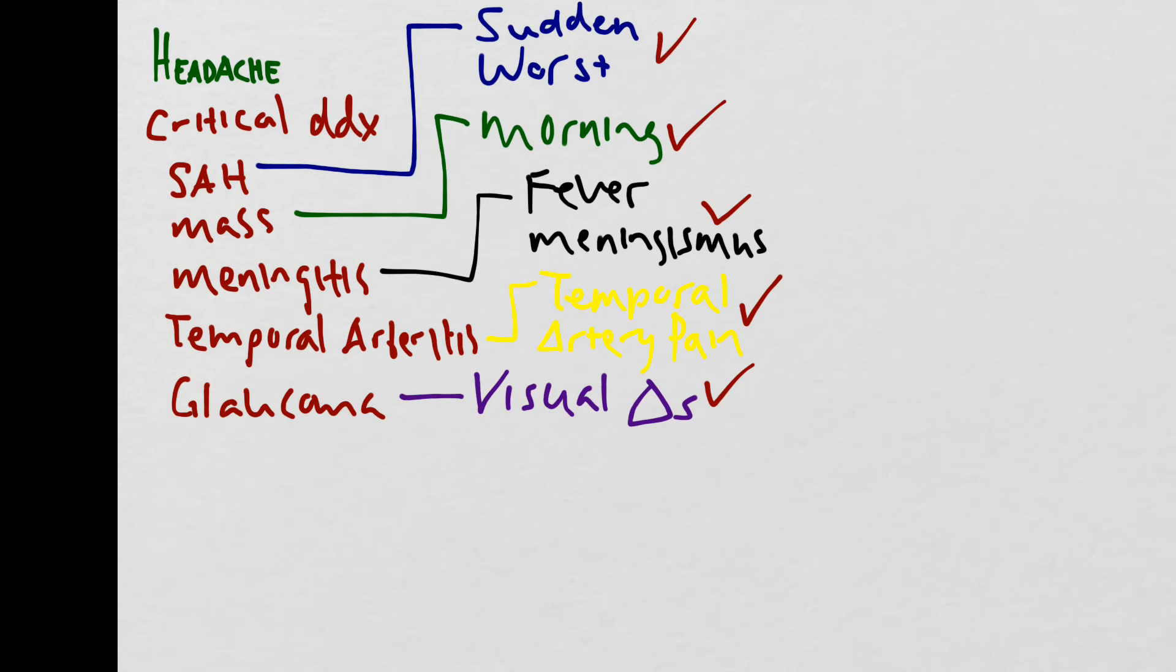For a patient that you're worried is having a subarachnoid hemorrhage, you'd want to order a CT and consider performing a lumbar puncture. For a patient with a concerning story for an intracranial mass, you'd want to consider either getting a CT or an MRI, understanding that an MRI is better at detecting intracranial masses.